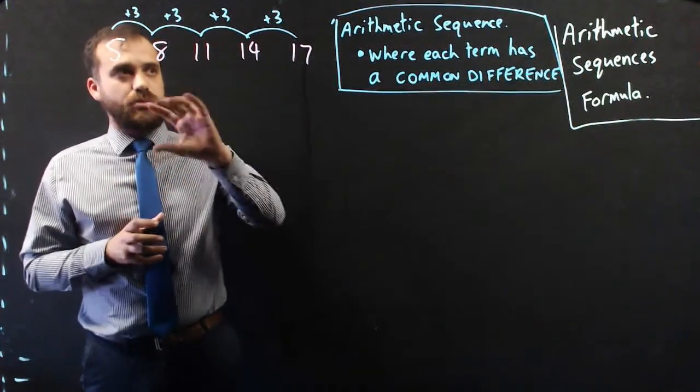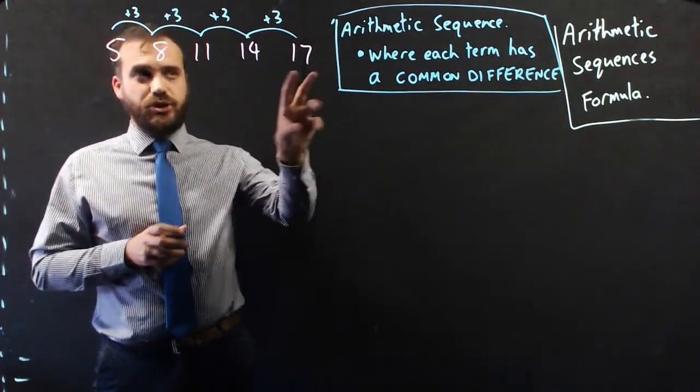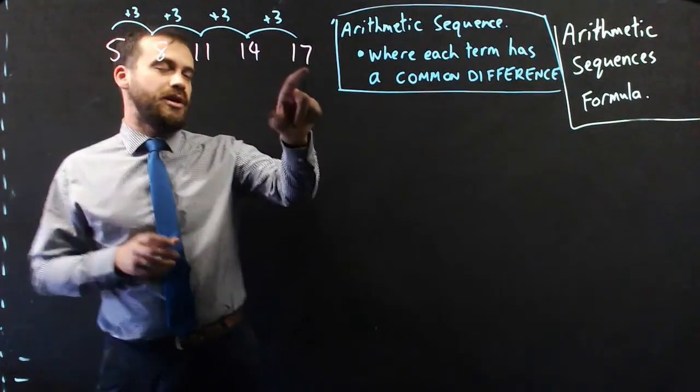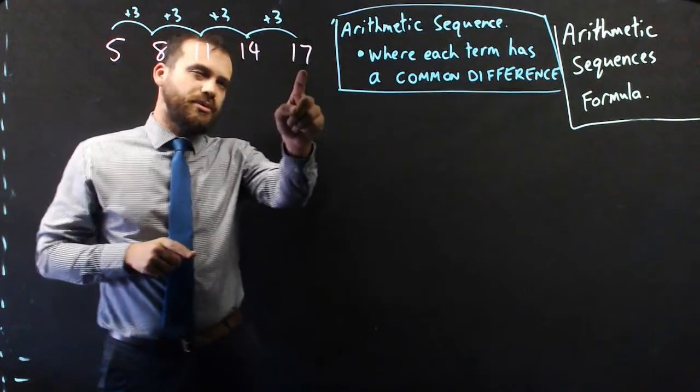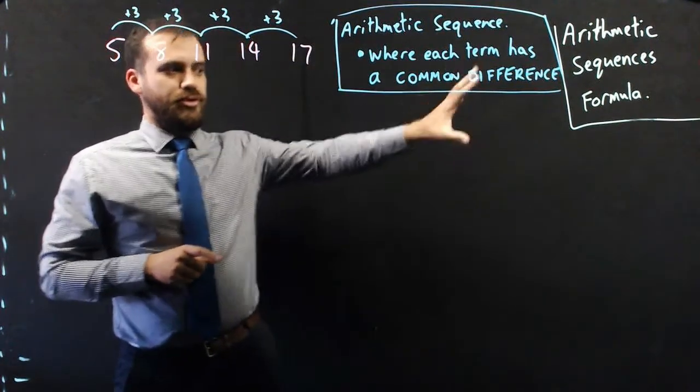So, before I show you the formula for an arithmetic sequence, I want you to think about how you would find the 100th term. So, 1, 2, 3, 4, 5. That's the 5th term. How would you find the 100th term?